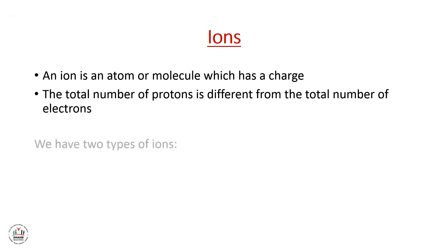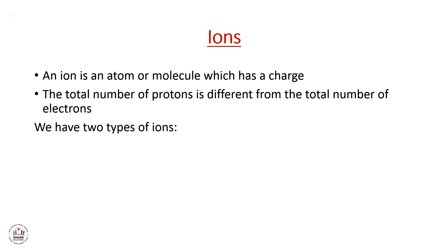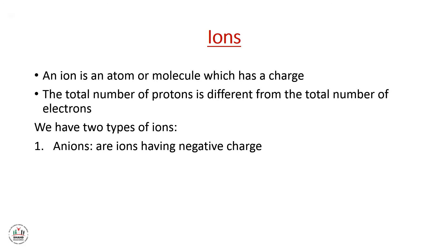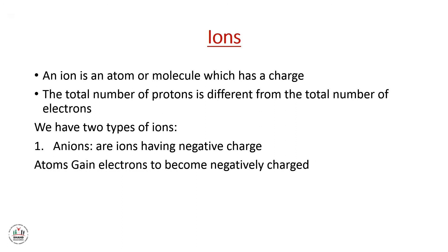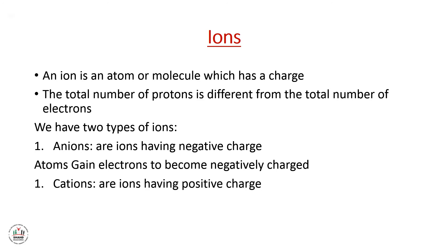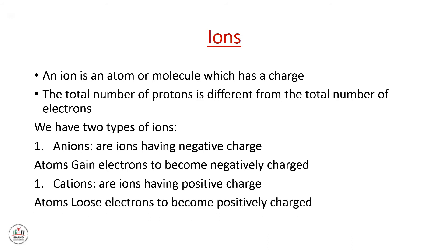We have two types of ions. The first type is called anions — anions are ions that have a negative charge. In this type, an atom gains electrons to become negatively charged. The second type is called cations — cations are ions having a positive charge. In this type, atoms lose electrons to become positively charged.